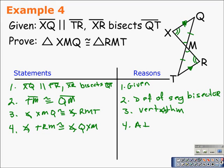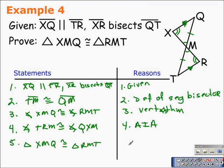We can now state that triangle XMQ is congruent to triangle RMT by angle-angle-side. I hope you've enjoyed the video proofs done today with angle-angle-side and angle-side-angle.